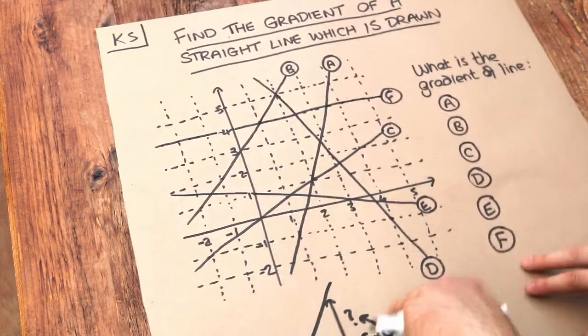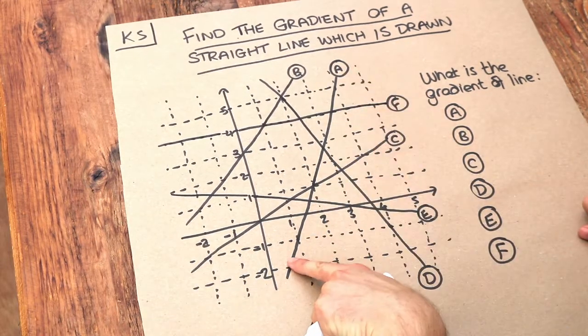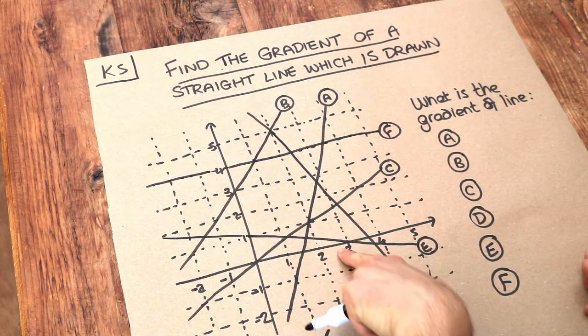So we can just count squares for this particular exercise. Let's look at line A first. We want to find the gradient of this.